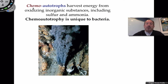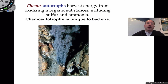But what about the ones that don't use the sun? These are called chemoautotrophs. They're still autotrophic because they can make their own energy, but what they do is oxidize energy from inorganic substances such as sulfur and ammonia spewing from the earth in deep thermal vents at the bottom of the ocean. They don't use the energy of the sun — they use chemical energy and also the heat as a catalyst from these thermal vents. These are exclusively bacteria that are chemoautotrophs.